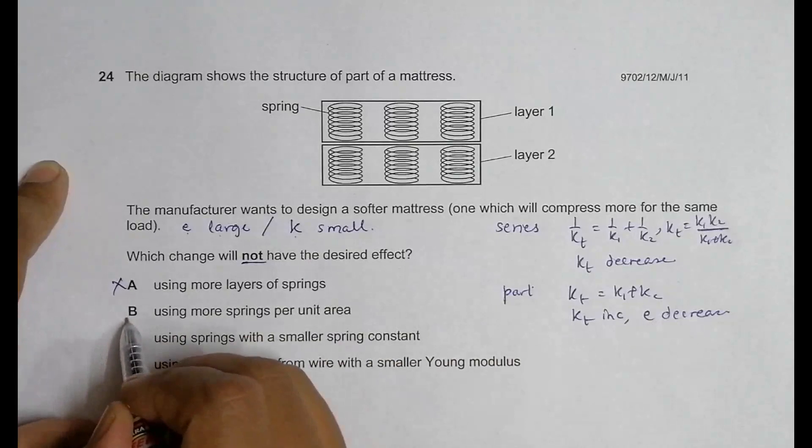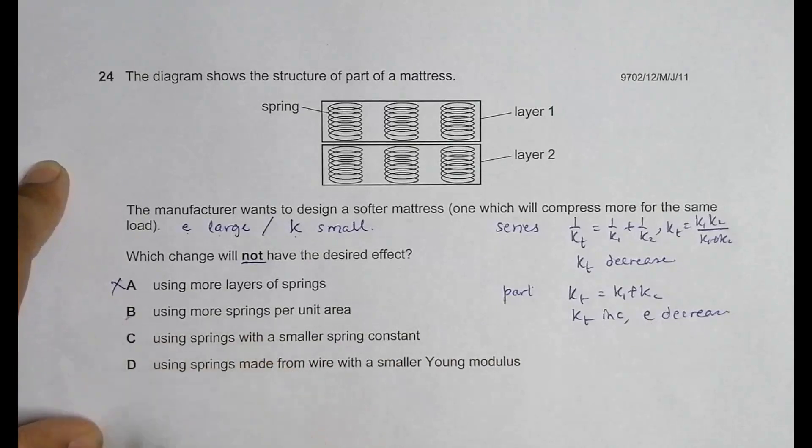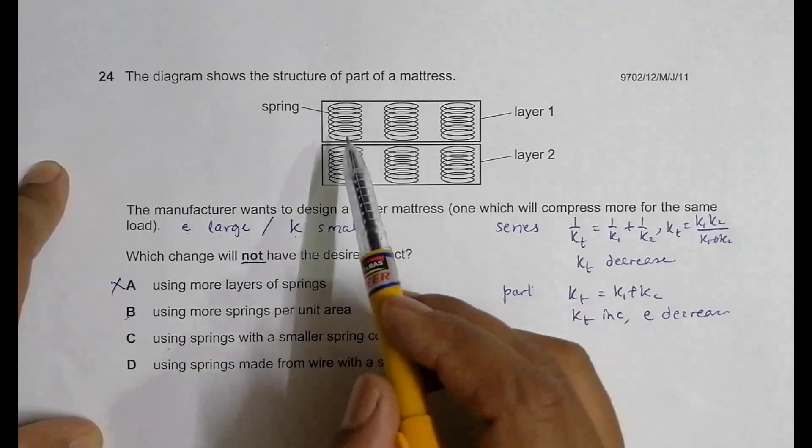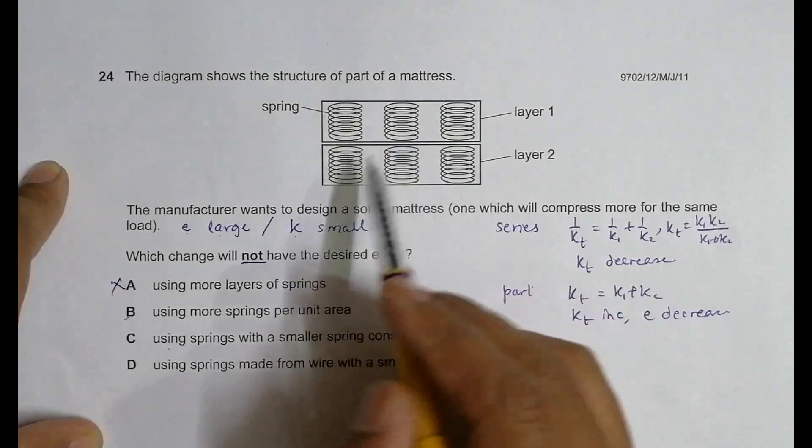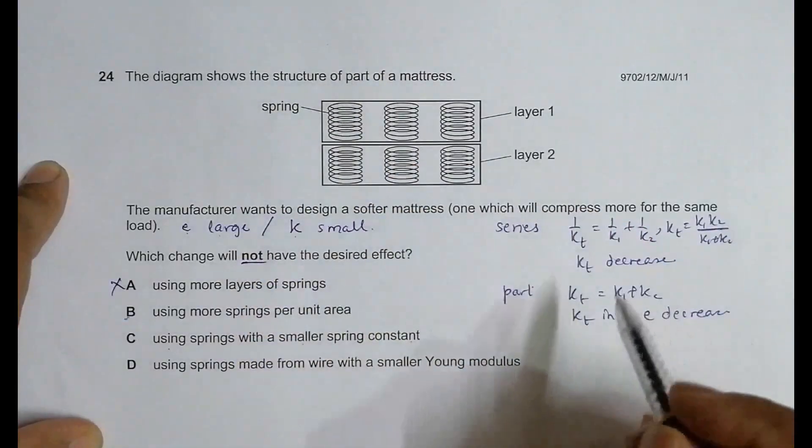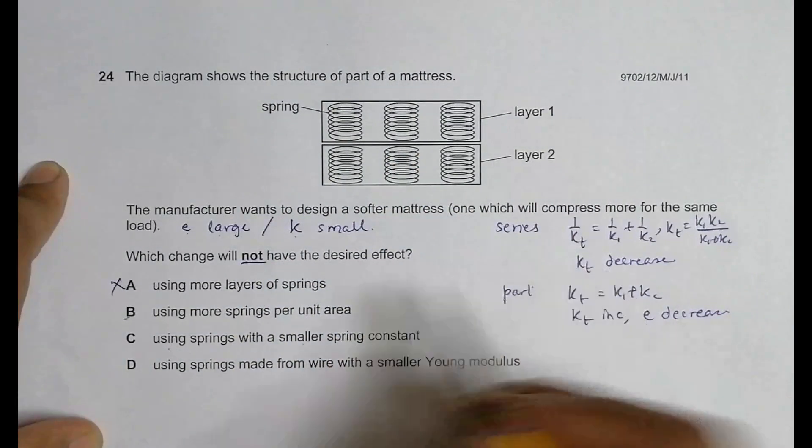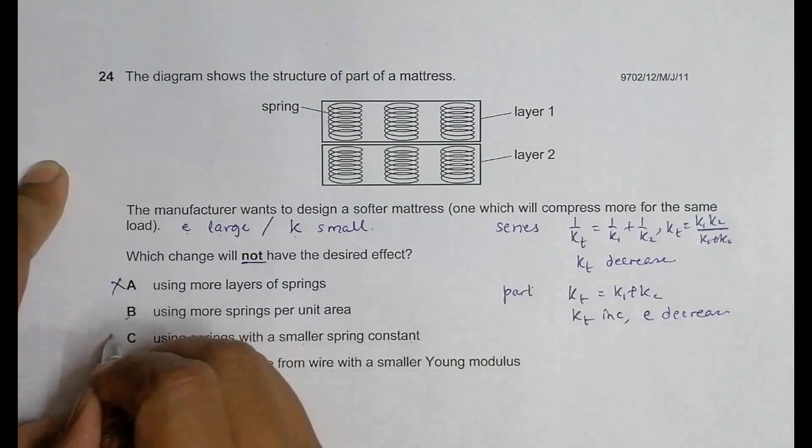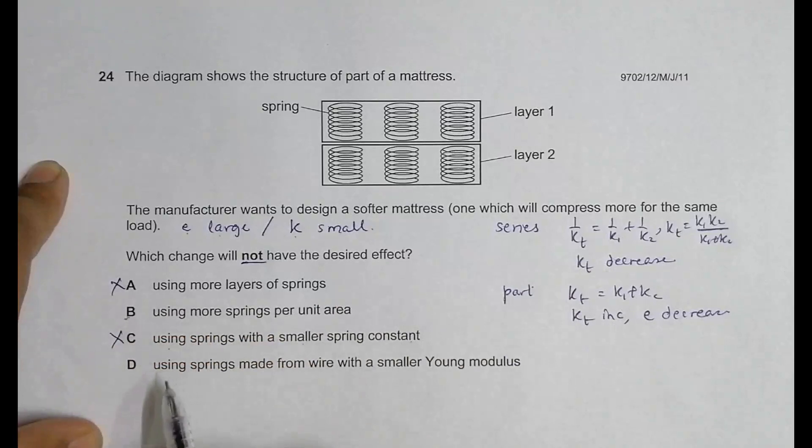Option C: using springs with a smaller spring constant. Smaller k means the overall k will also decrease, so it's the same as option A. This is also not the answer.